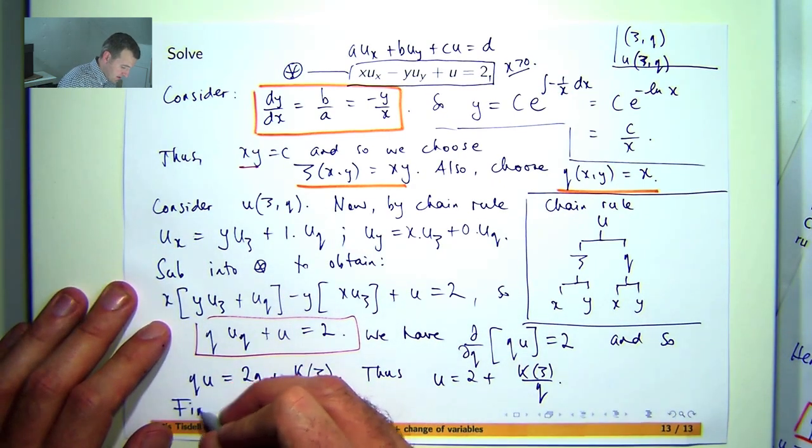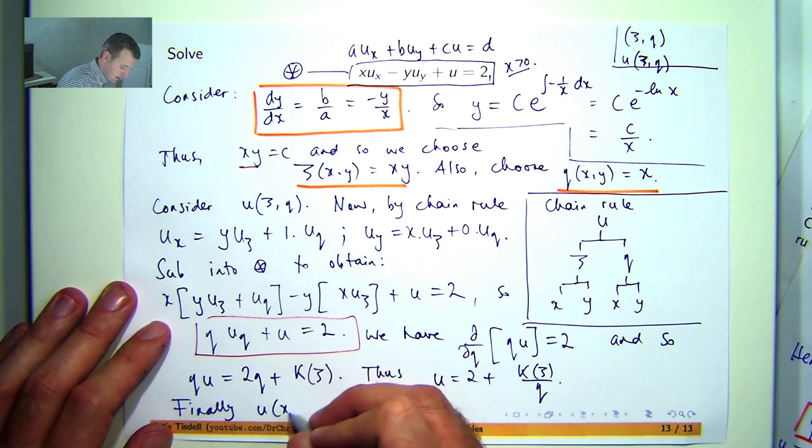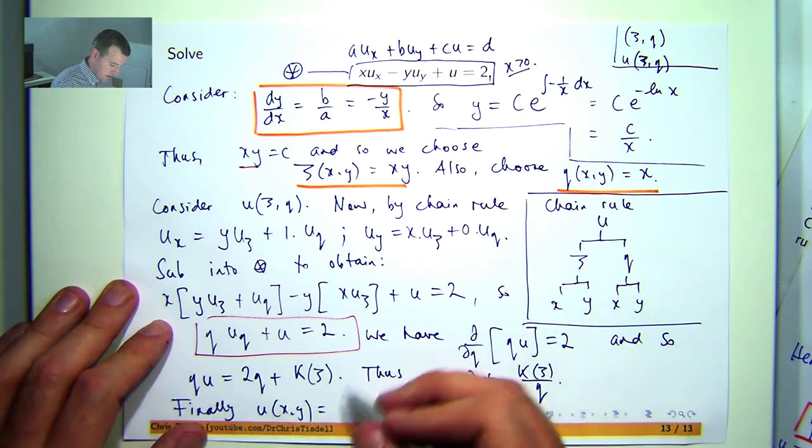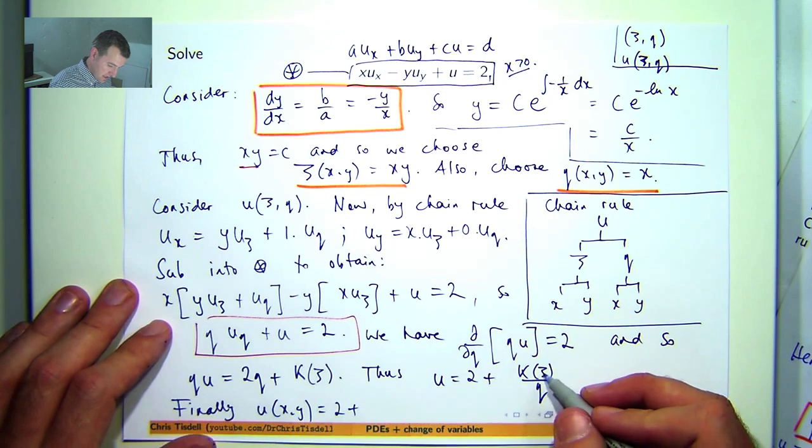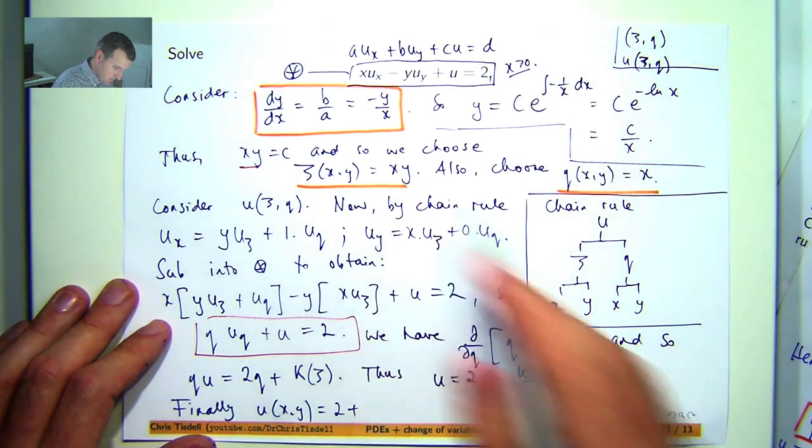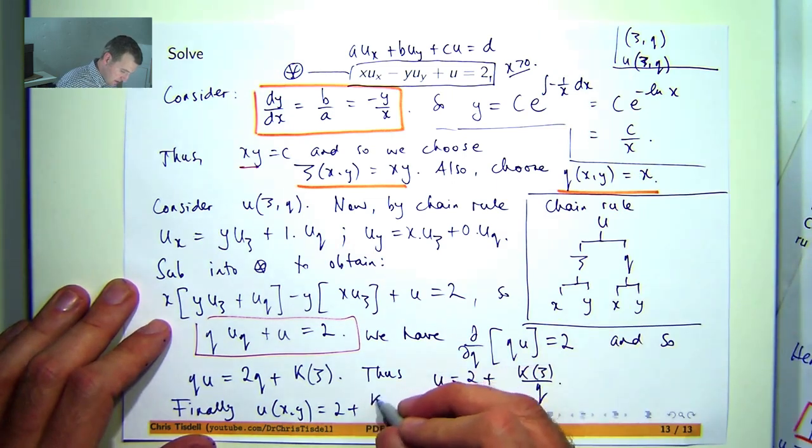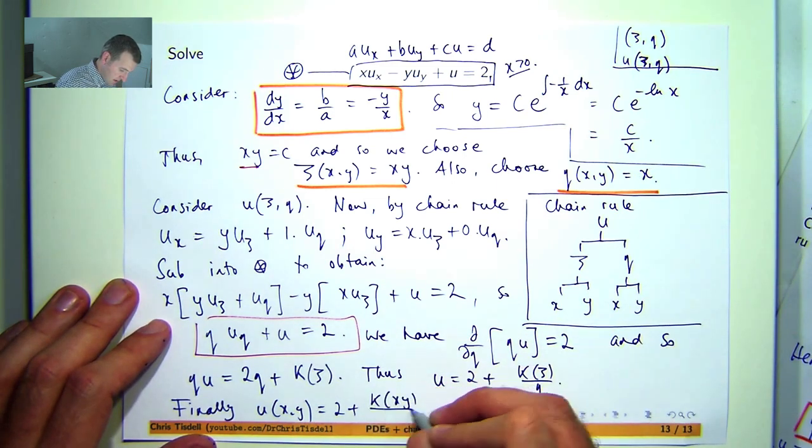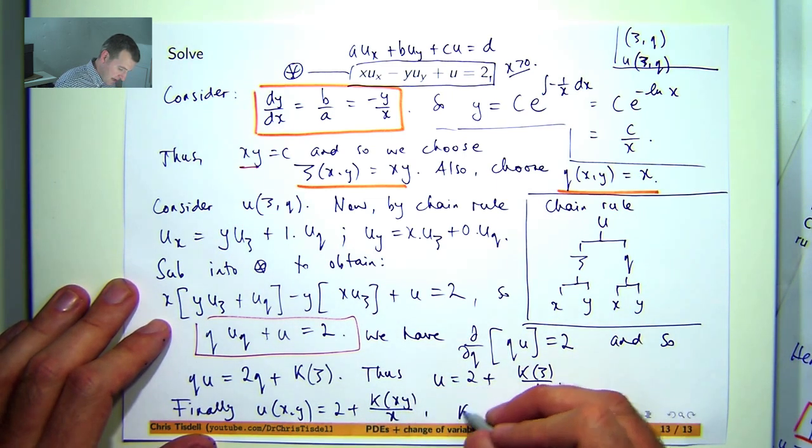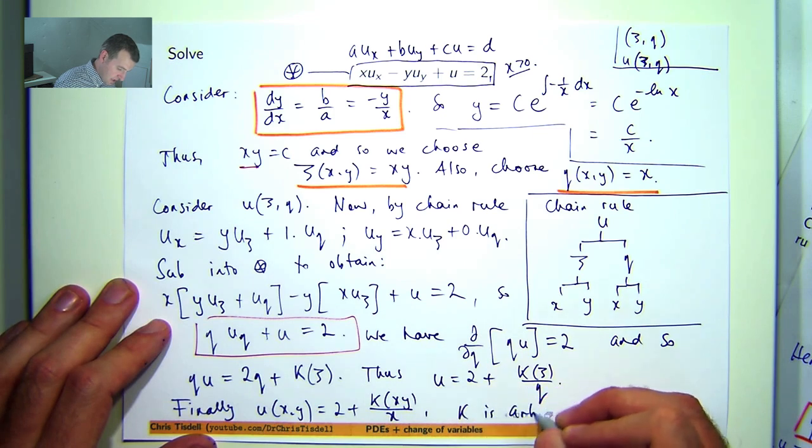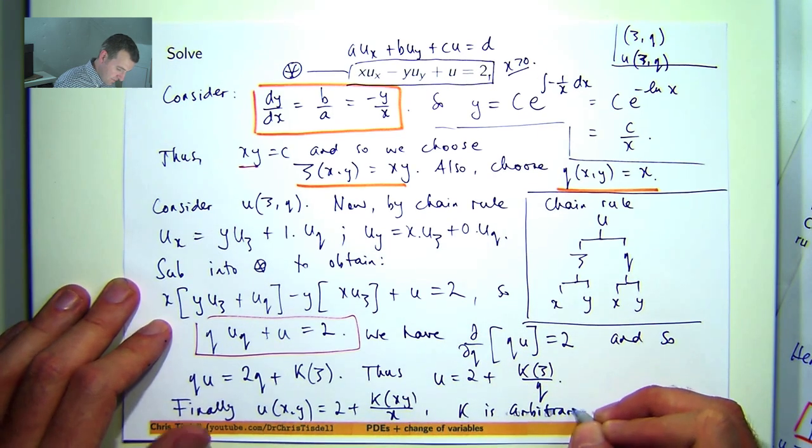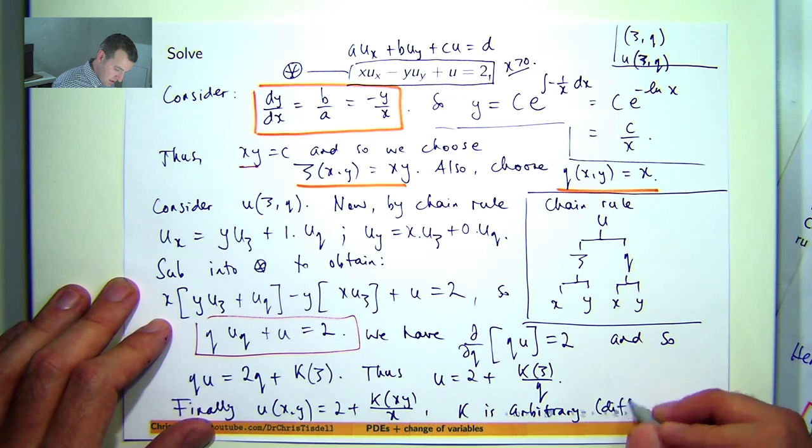And now it's time to put everything back in terms of x and y. So our final answer is going to be, psi is xy, eta is just x, where k is an arbitrary but differentiable function.